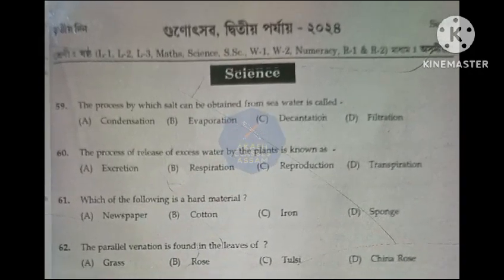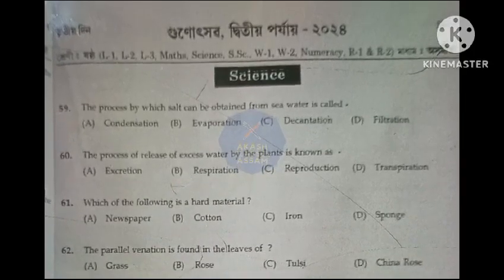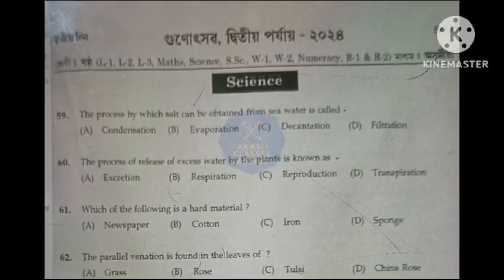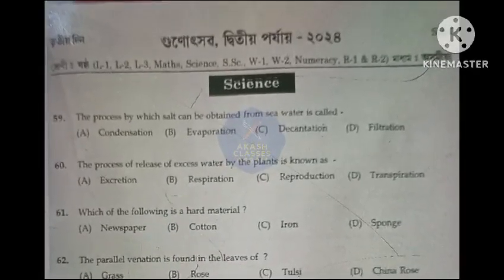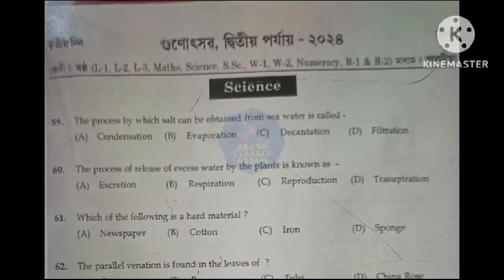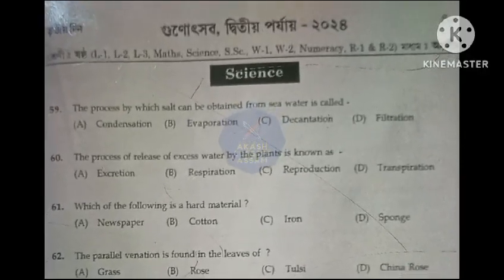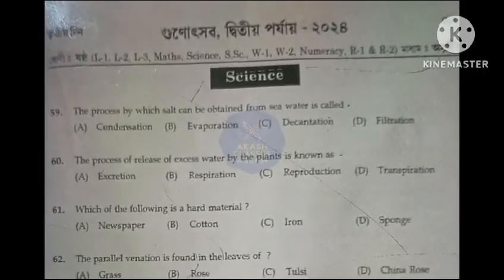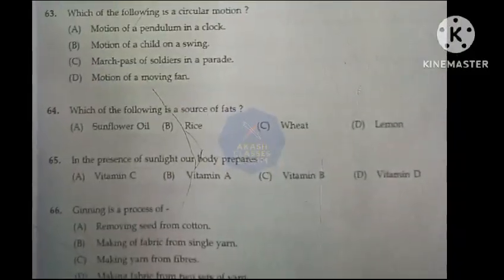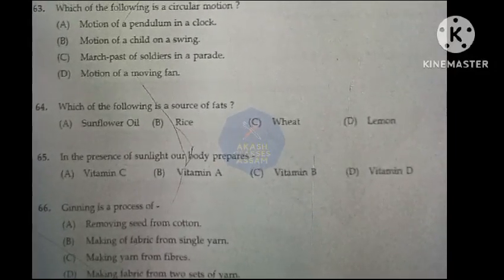The process by which salt can be obtained from sea water is called: Option B, evaporation. The process of release of excess water by plants is known as: Option D, transpiration. Which of the following is a hard material? Option C, iron. The parallel venation is found in the leaves of: Option A, grass.